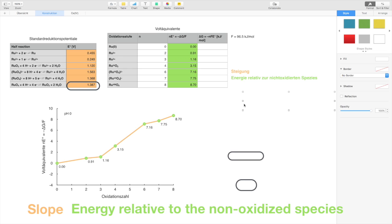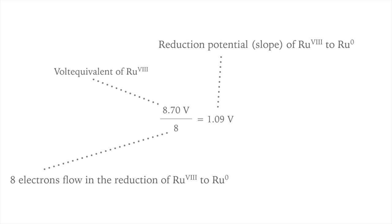The green points show the energy level relative to the oxidation state zero. Ruthenium 8 has an nE° value of 8.7 volts, for example. What can we learn from that? The slope between ruthenium 0 and ruthenium 8 gives us the hypothetical reduction potential between these two species. In this case, the reduction potential is 1.09 volts.